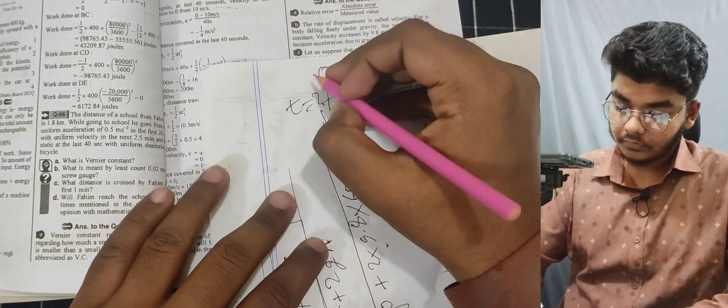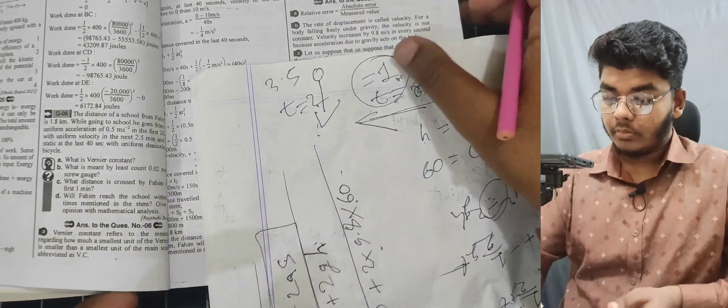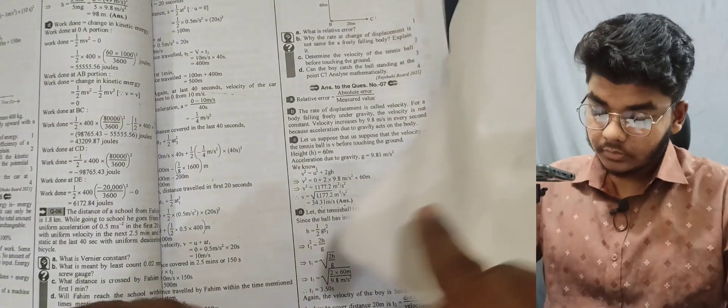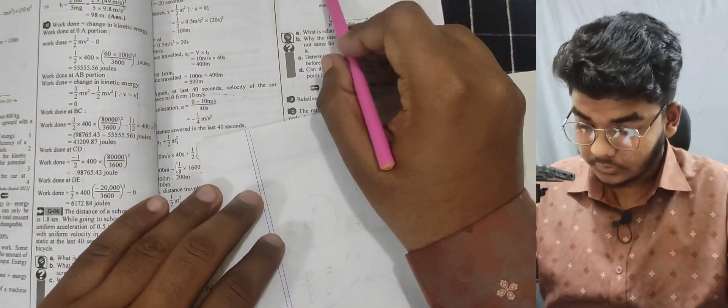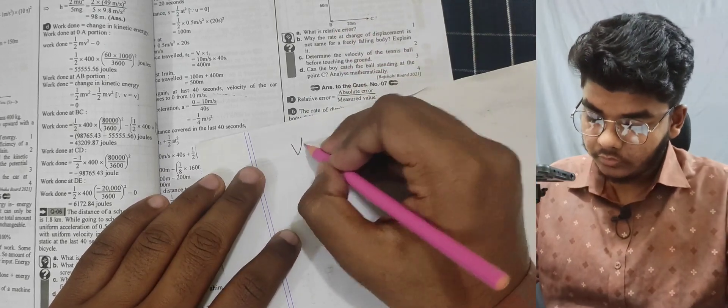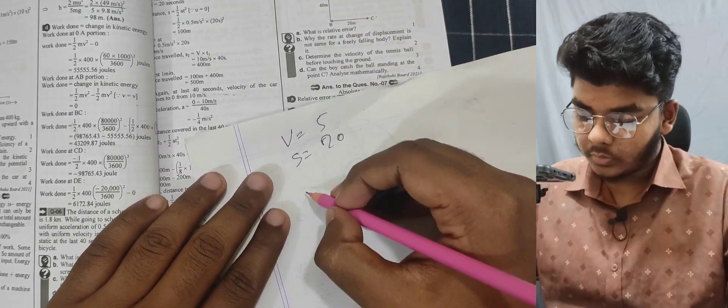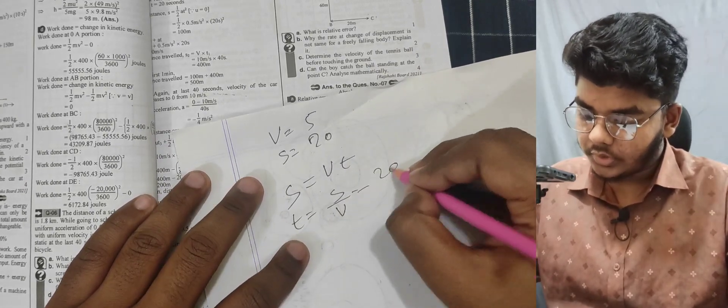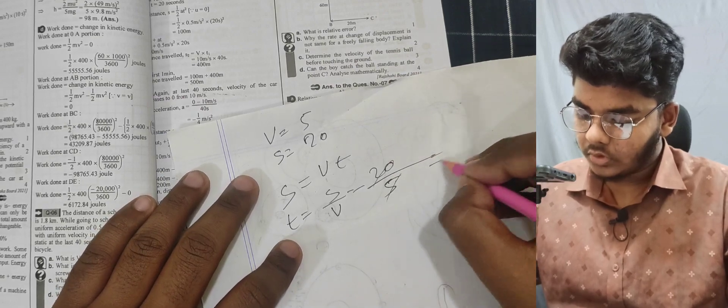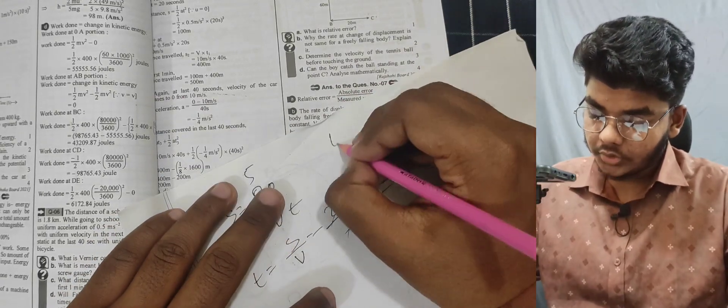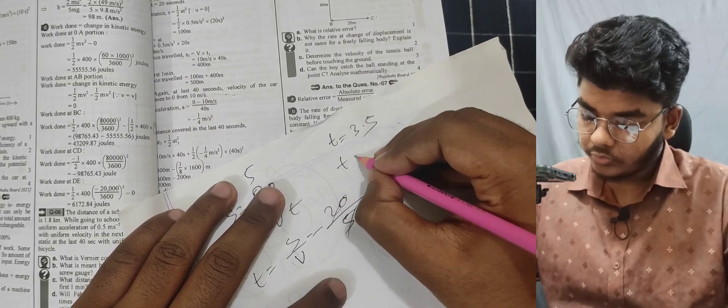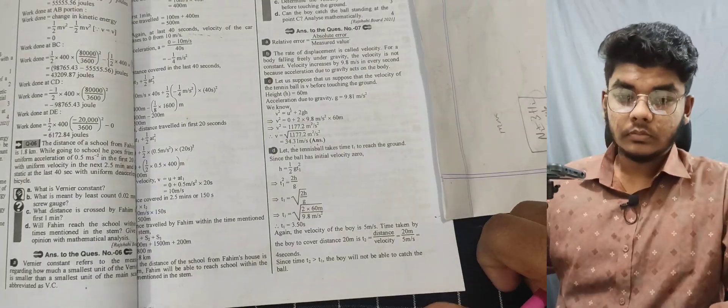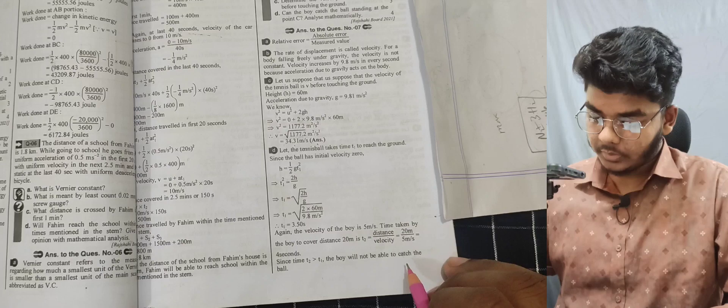The ball takes 3.5 seconds. For the boy: velocity is 5 meters per second, distance is 20 meters. Using t = s/v = 20/5 = 4 seconds. Ball time t₁ = 3.5, boy time t₂ = 4. Since t₂ is greater than t₁, the boy will not be able to catch the ball.